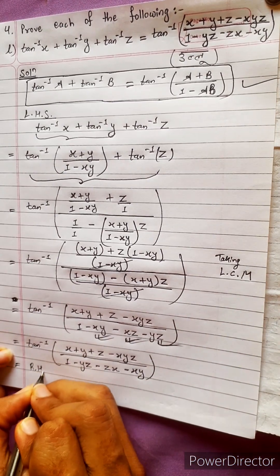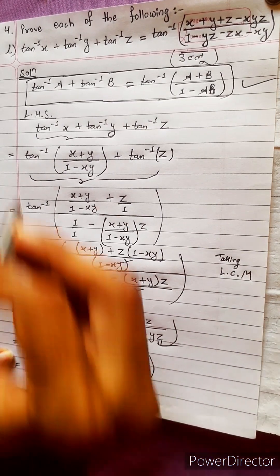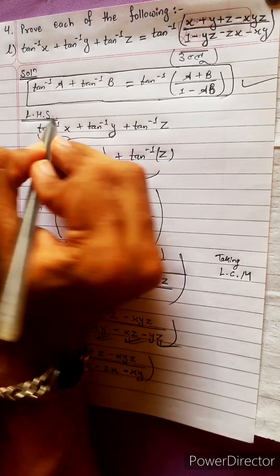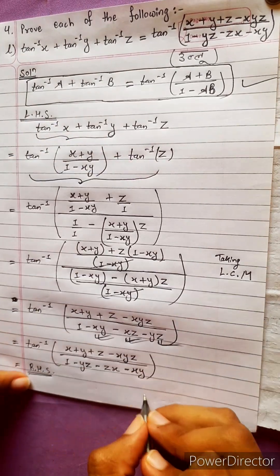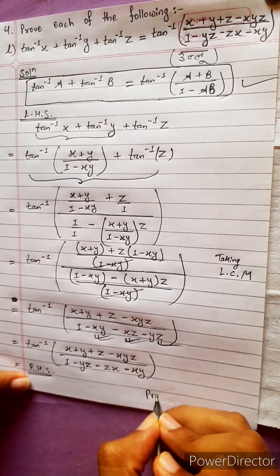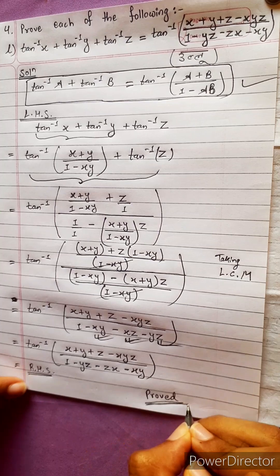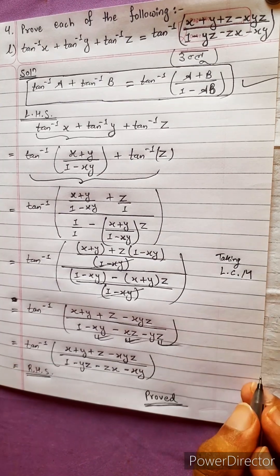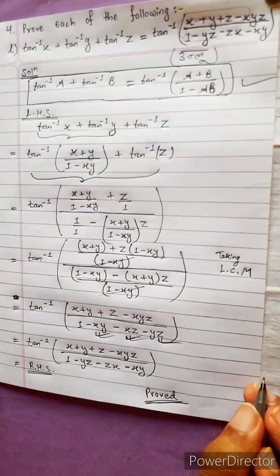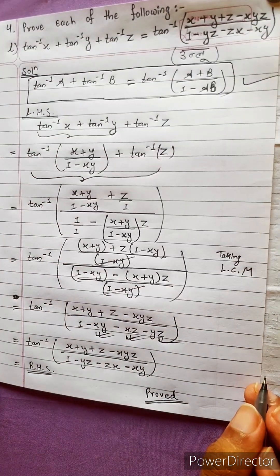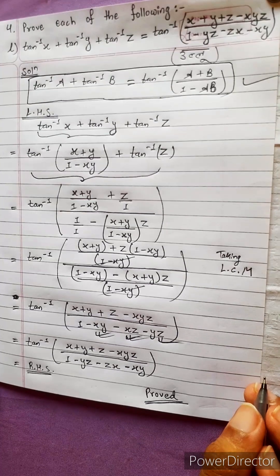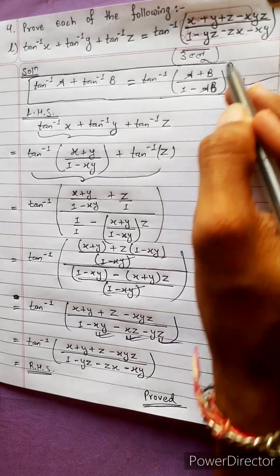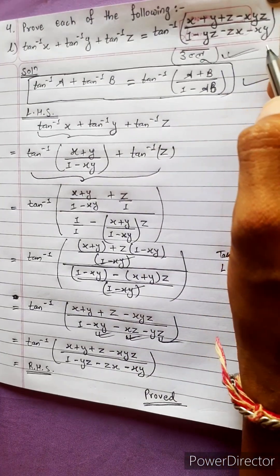Solving LHS, we got RHS. It means proved. This one was also very easy. Be ready for the next easy question.